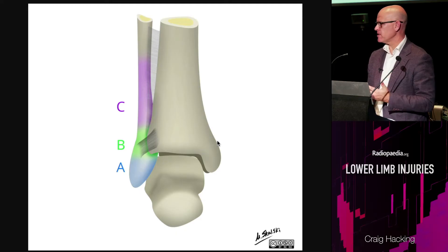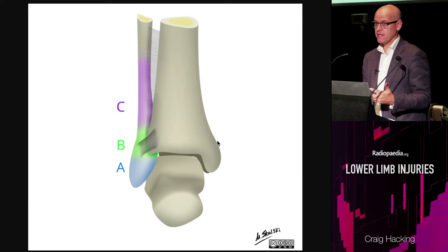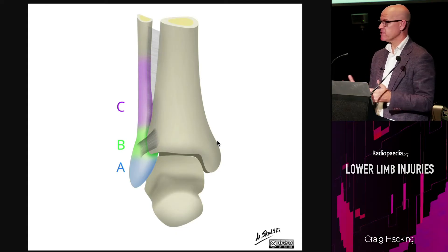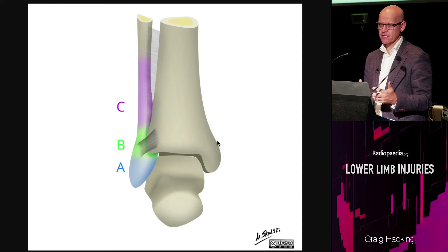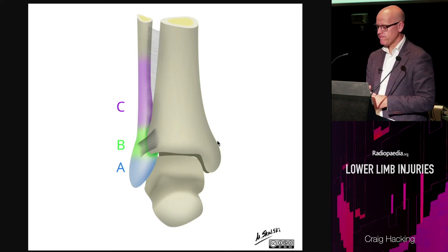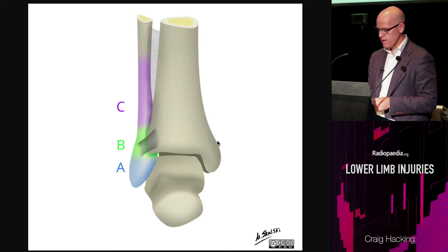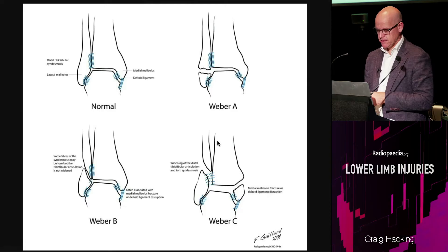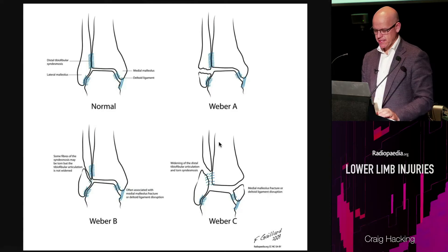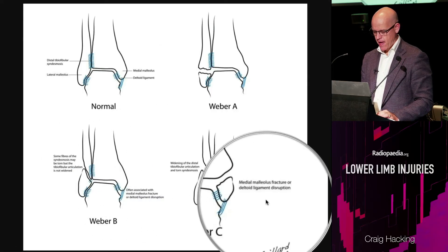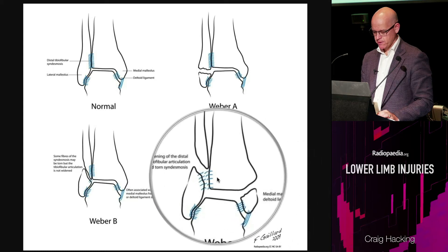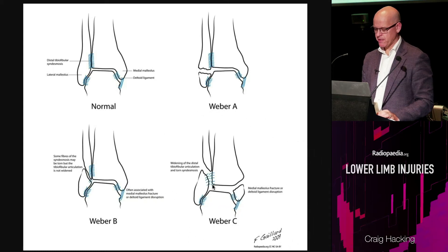Any time the syndesmosis is potentially injured, you need to find out if it's intact or not. If it's been disrupted, surgery is indicated and you need to put in something like a syndesmotic screw or a tightrope. So remember your ABCs — the syndesmosis can be potentially ruptured in a B and disrupted in a C.